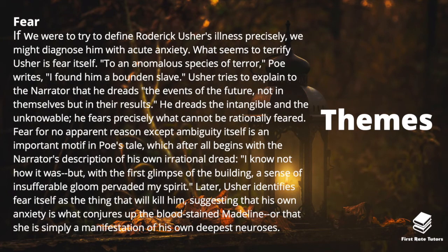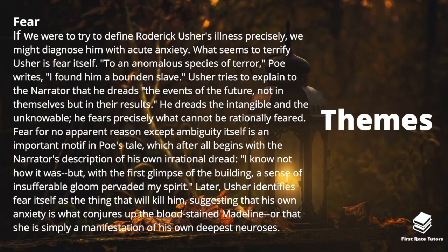The other theme is fear. If we were to define Roderick Usher's illness precisely we might diagnose him with acute anxiety — what seems to terrify Usher is fear itself. Poe writes that 'to an anomalous species of terror I found him a bound and slave.' Usher dreads the events of the future not in themselves but in their results — the intangible and the unknowable, precisely what cannot be rationally feared. The story begins with the narrator's own irrational dread: 'I know not how it was, but with the first glimpse of the building a sense of insufferable gloom pervaded my spirit.' Later, Usher identifies fear itself as the thing that will kill him, suggesting his anxiety conjures up the bloodstained Madeline as a manifestation of his deepest neuroses.